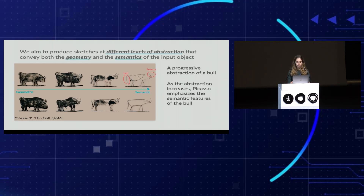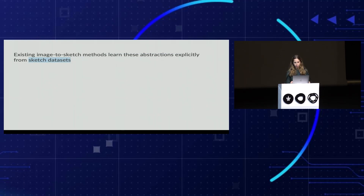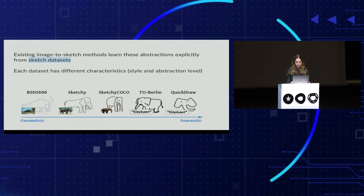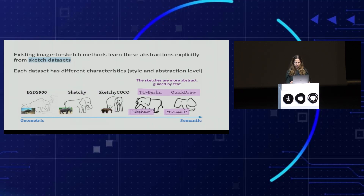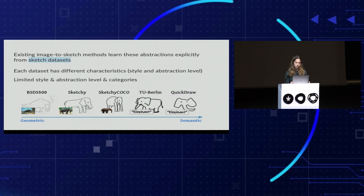In our work, we aim to produce sketches at different levels of abstraction that convey both the geometry and the semantics of the input object. This task of image-to-sketch generation has been widely explored, and existing methods usually rely on sketch datasets to learn abstractions. However, each dataset has different characteristics in terms of abstraction and style, so existing methods are limited to a certain style, abstraction level, and the categories observed in training.